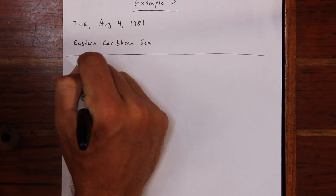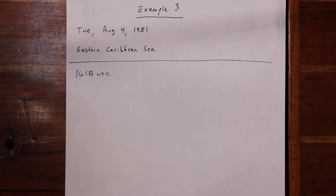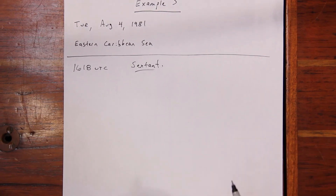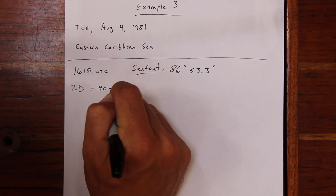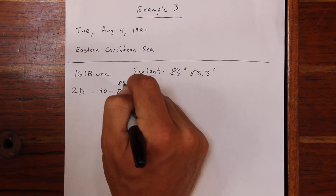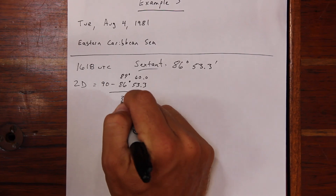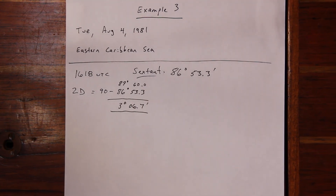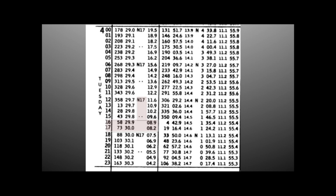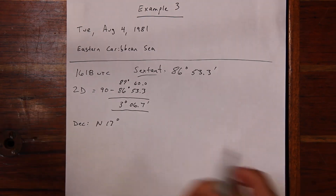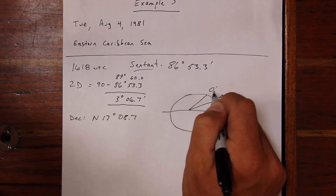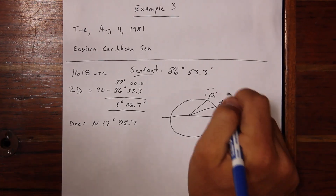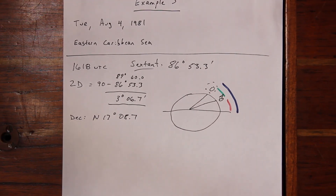In the third example problem, we're in the Caribbean Sea and the time of measurement is 1618 UTC. Our sextant measurement is 86 degrees and 53.3 minutes. To find zenith distance, we subtract from 90 using the 89 degrees 60 minutes trick, giving us 3 degrees and 6.7 minutes. To find our declination, we interpolate — we're 20 minutes into the hour, or one-third of the way through — coming up with 17 degrees and 8.7 minutes. Drawing our figure, we determine that latitude equals declination minus zenith distance.